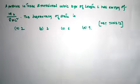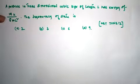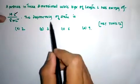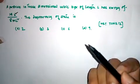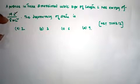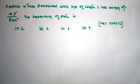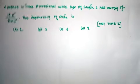So let's go for the solution to this problem. A particle in a three-dimensional cubic box of length L has an energy of this value. We are supposed to find the degeneracy of this energy state. In order to find out the degeneracy of the energy state, we have to know some key points.